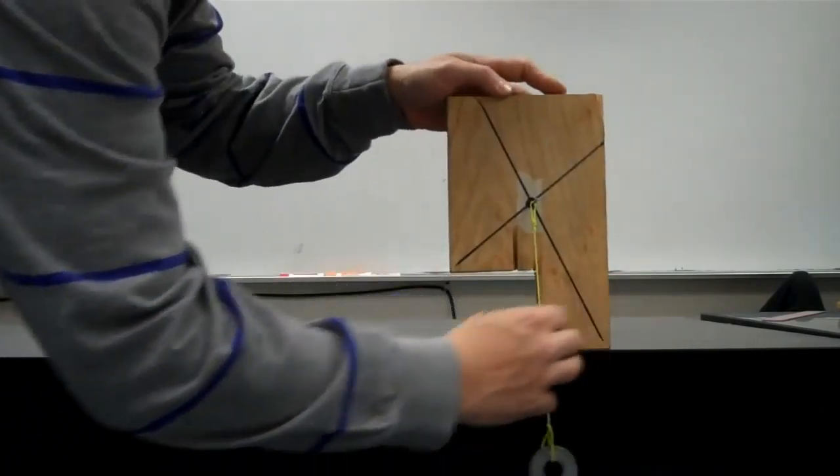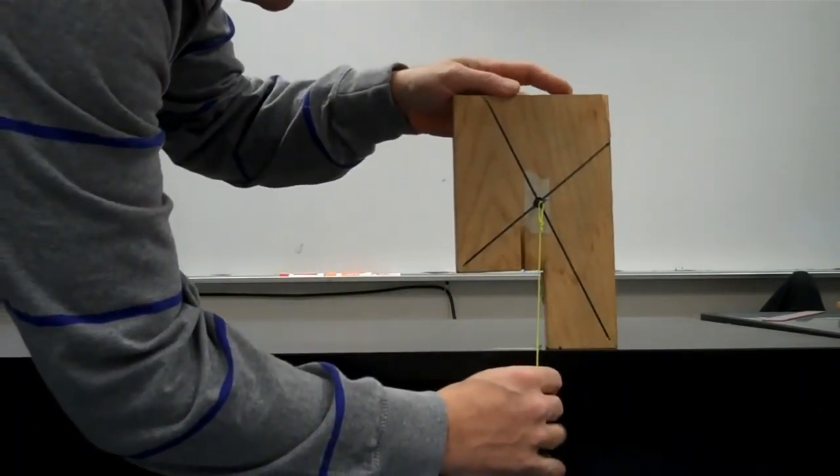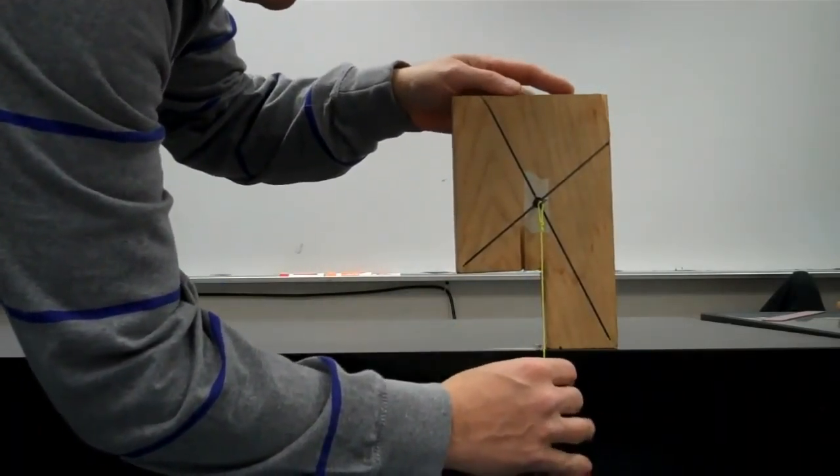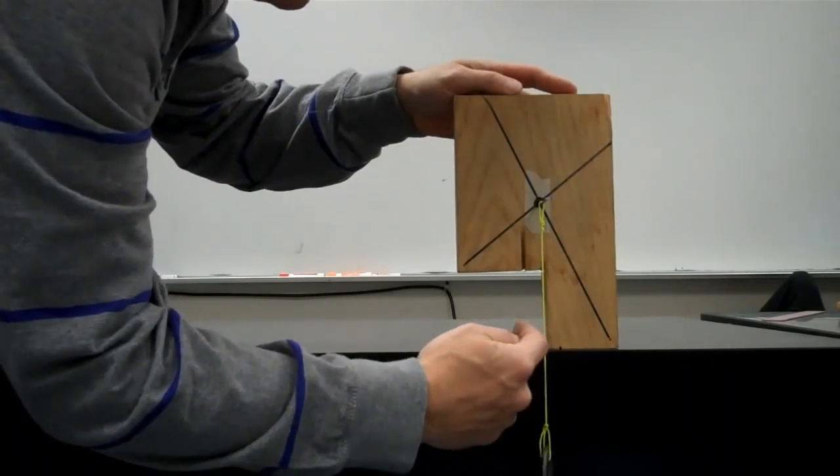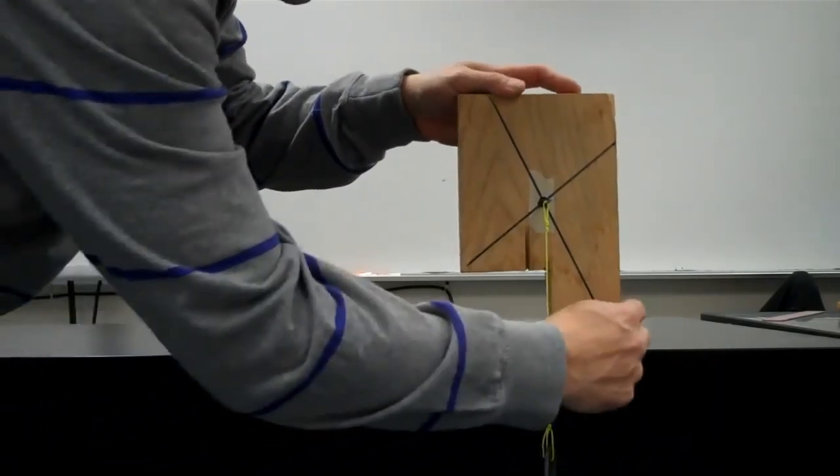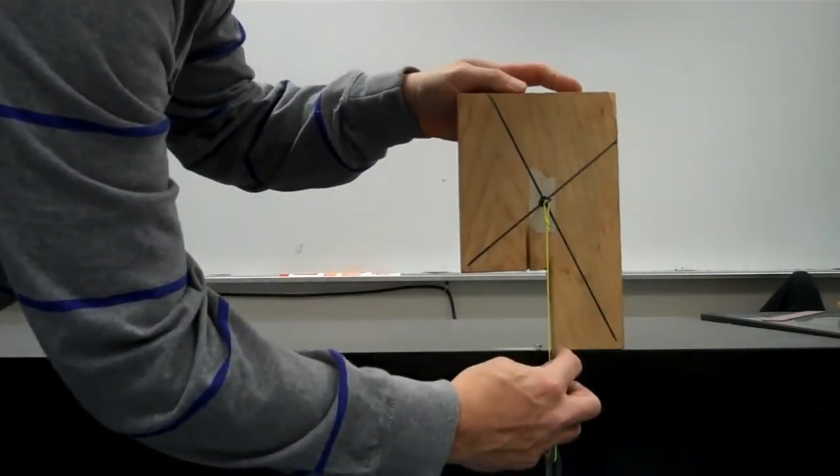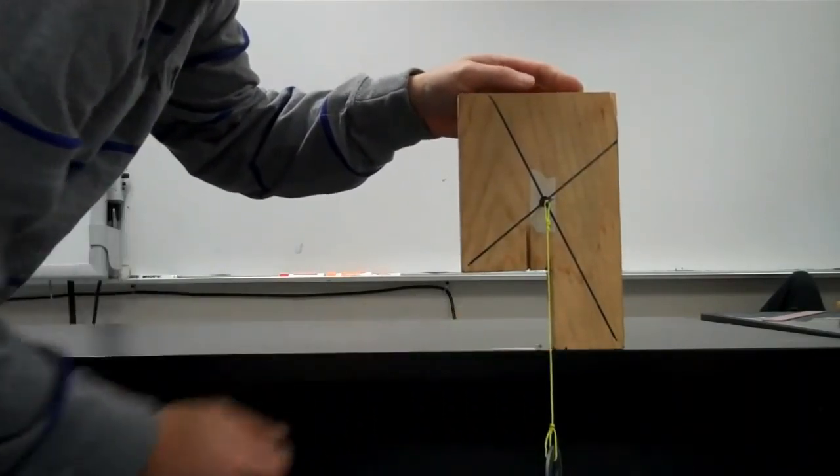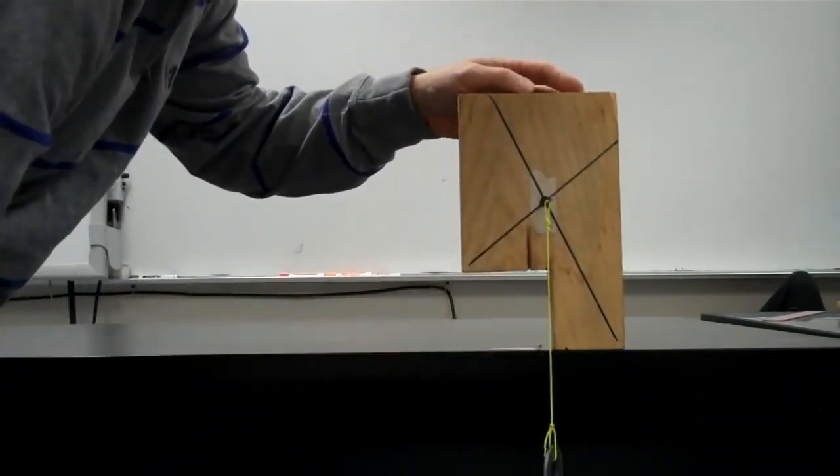However, if I put the block this way, you notice that the yellow string is just a tiny bit to the left of the last point of support, right here. So that creates a small lever arm distance, which produces a torque, and the block tips over.